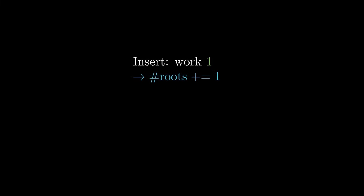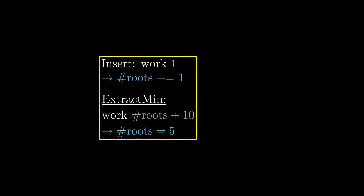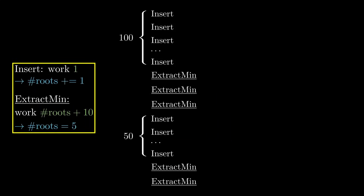Let's see how this 'be lazy and clean up the mess afterwards' approach might look like in practice. Let's assume every insert call takes one unit of time and adds one node to our root list. Every ExtractMin call takes at least time proportional to the number of roots plus maybe some extra time, say 10 units. But during that time it will clean up the root list significantly, reducing the number of trees to, say, 5. When we look at how much time every operation needs, we see that after a lot of inserts, the next ExtractMin will be slow. But thanks to our cleanup, most calls are actually quite fast.